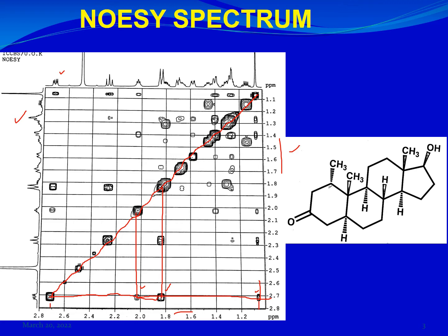Here's another correlation for the proton resonating at about 2.25 ppm. If you go to the right, it connects with the proton resonating at about 1.82 ppm. You can also form squares just like in the COSY spectrum, and you will see the same three correlations on the vertical axis with those squares as well.